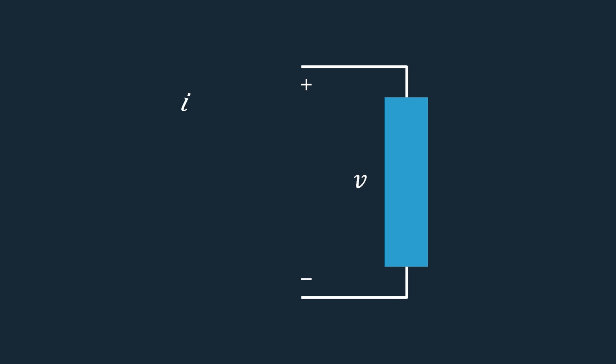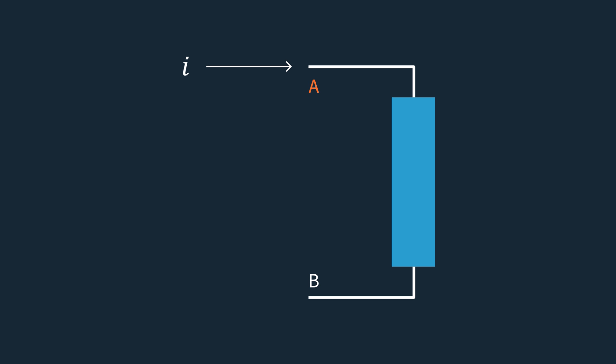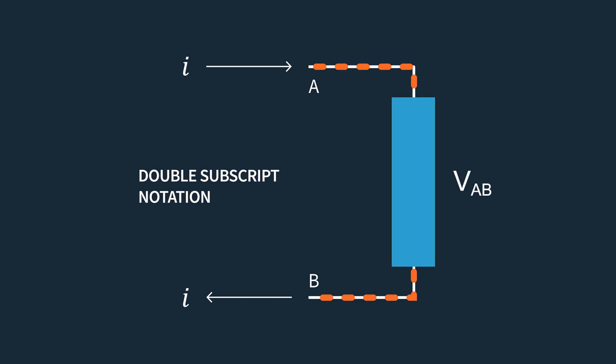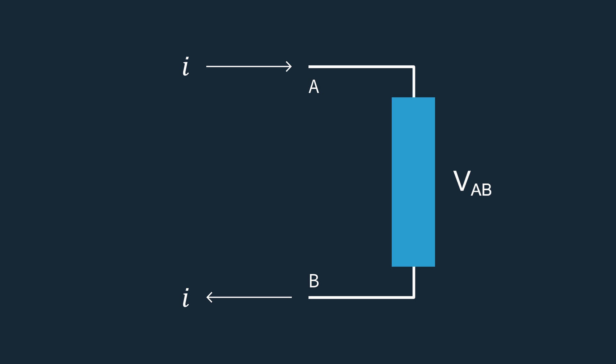Circuit diagrams often represent voltage polarities using plus and minus signs. Another way to represent voltage polarities is using what's known as double subscript notation. Consider a typical two-terminal electrical circuit element with a voltage V across it and a current I flowing through it, with terminals labeled A and B. Assuming the voltage at A is higher than at B and current flows from A to B, we can denote the voltage as VAB — this is the voltage at point A with respect to point B, with A at higher potential. This holds true only if the sign of the voltage is positive.